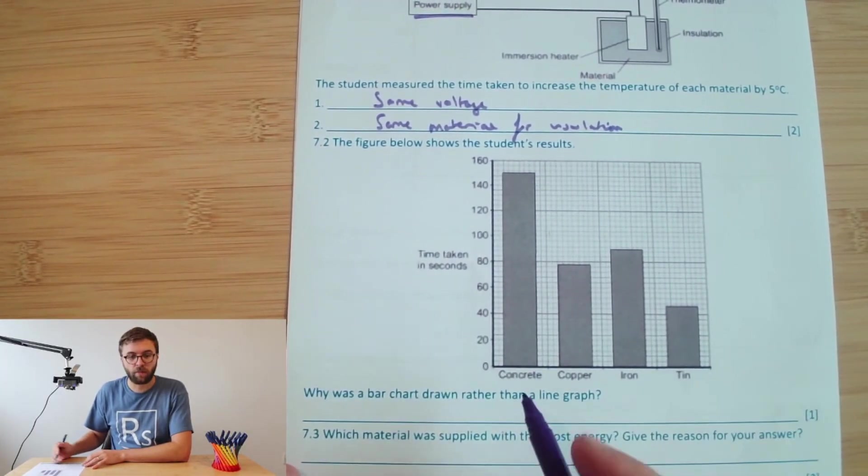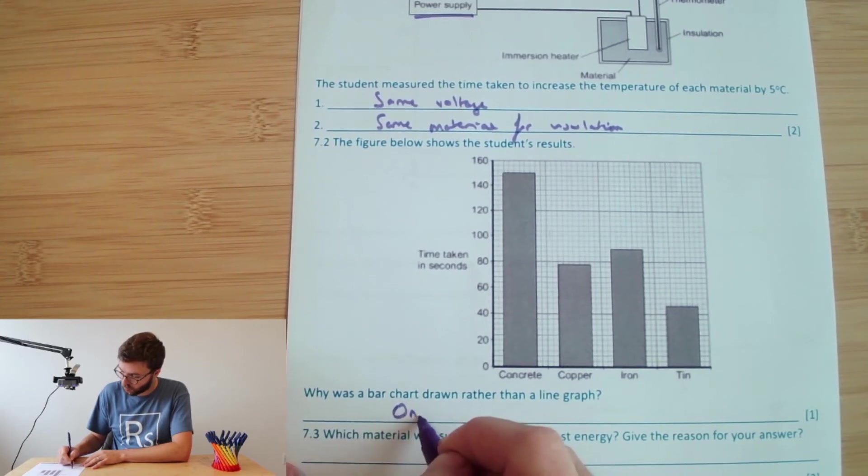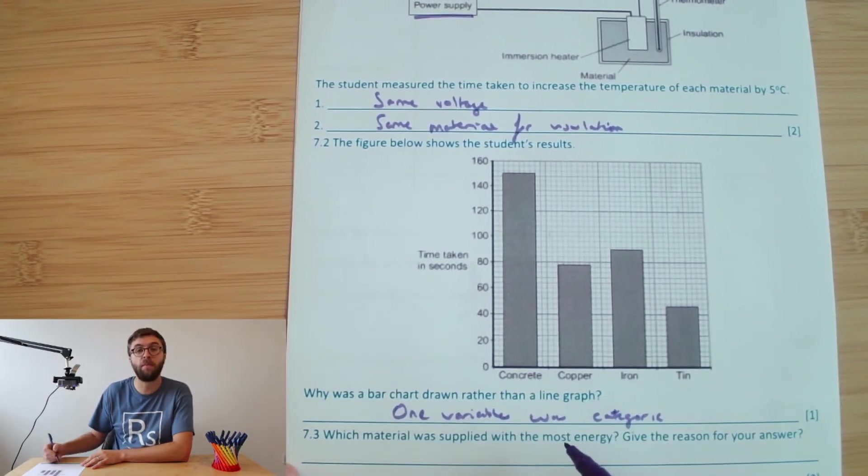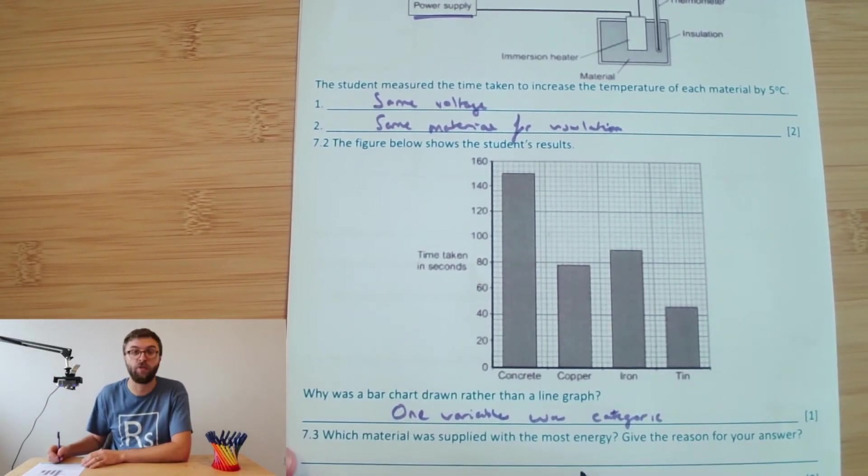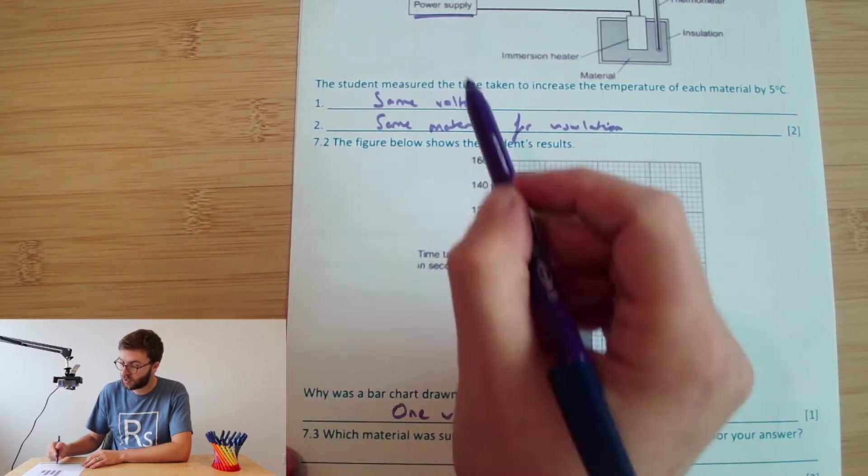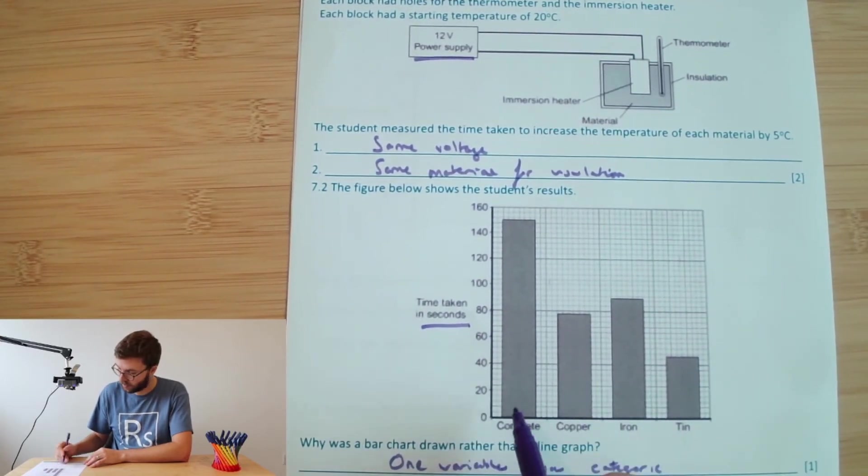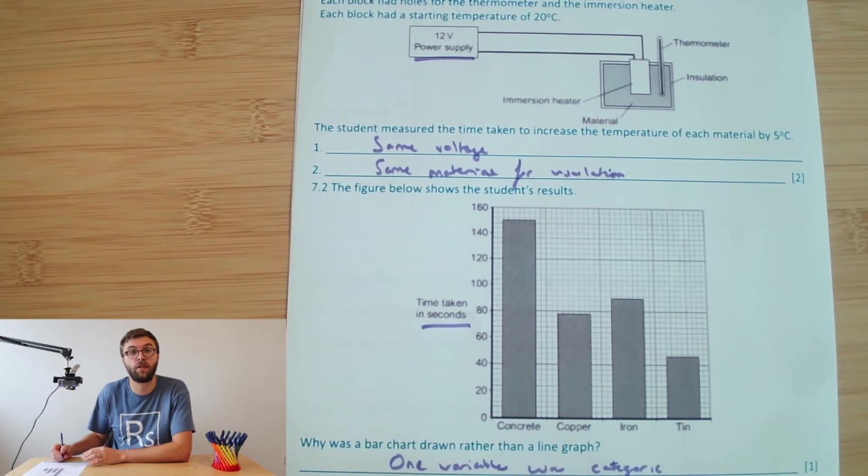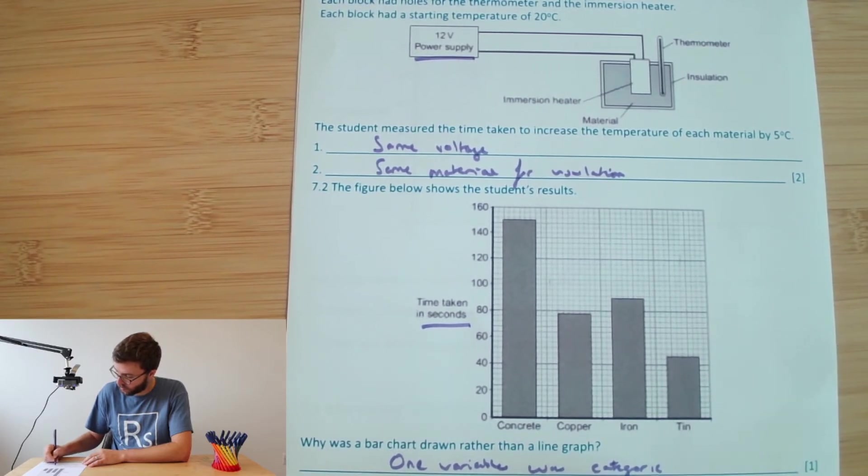Okay, next question. Why was a bar chart drawn rather than a line graph? So here's the student's results. Why did they do a bar chart? They like to ask questions like this and the reason they use a bar chart was because one of the variables was categoric. What I mean by that, it's not numbers based on a number line. They're categories. It was either concrete or copper or tin or iron or whatever. That's when you draw a bar graph. Which material was supplied with the most energy? Give the reason for your answer. So they were using the same power supply, the same immersion heater. So therefore, the only difference was the amount of time that was taken in seconds. And you can see here that the concrete had the longest amount of time and so therefore they must have had the most energy transferred to it. And so the concrete time was on for the longest.